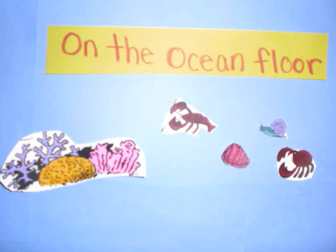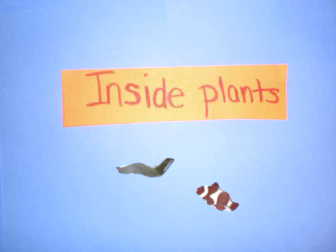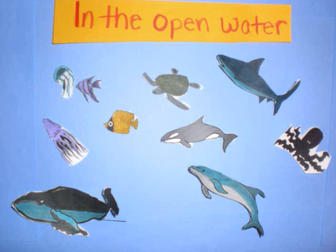Some plants and animals live on the floor of the ocean. Others make their homes in plants. And many just live in the open water.